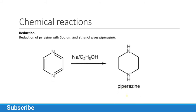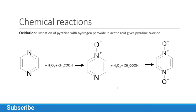For reduction: pyrazine in the presence of sodium and ethanol gives piperazine. For oxidation: pyrazine in the presence of hydrogen peroxide and acetic acid gives pyrazine N-oxide. First hydrogen peroxide and acetic acid react to give an intermediate product, then the intermediate product again reacts with hydrogen peroxide and acetic acid to give the final product, pyrazine N-oxide.